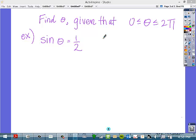All right, our next example is we are going to try and find theta, try and find the angle given that theta is in between 0 and 2π. So, we are told sine of theta is equal to 1 half.